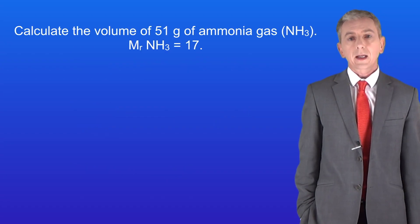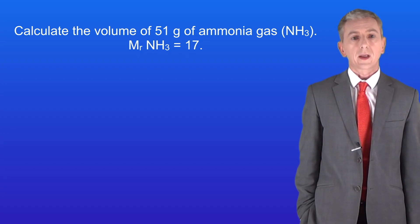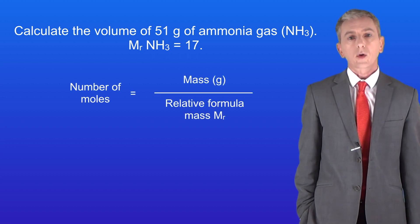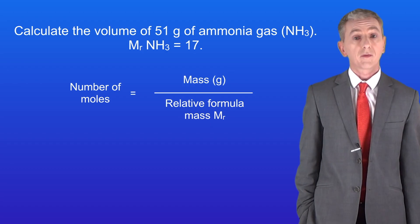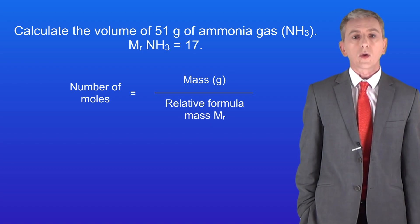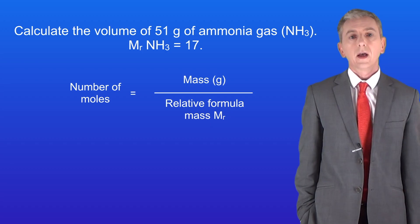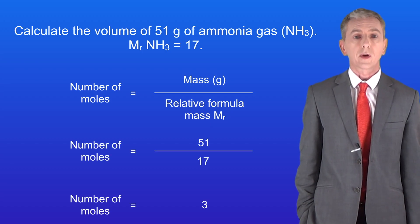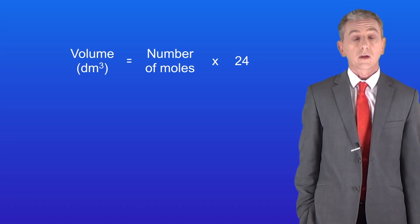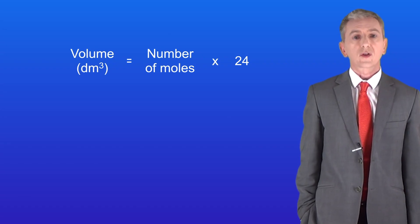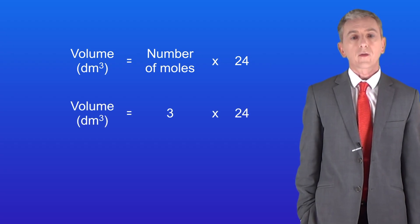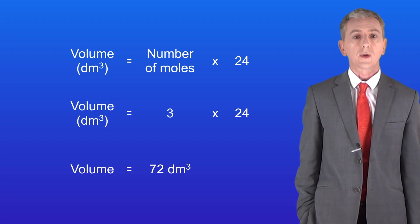Here's one for you: calculate the volume of 51 grams of ammonia. The relative formula mass of ammonia is 17. Pause the video and try this yourself. We start by calculating the number of moles: 51 divided by 17 tells us that we've got 3 moles of ammonia. Now we can calculate the volume by multiplying the number of moles by 24. 3 multiplied by 24 gives a final volume of 72 decimetres cubed.